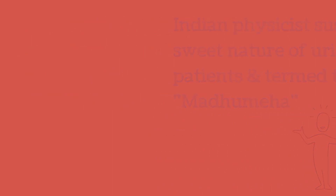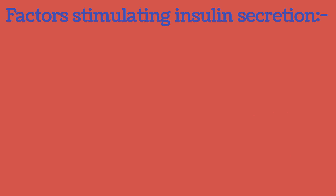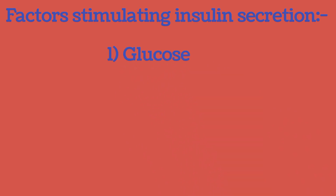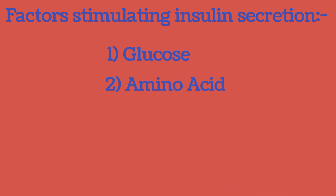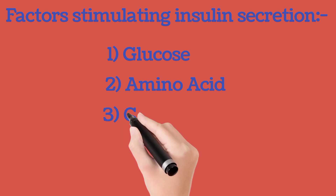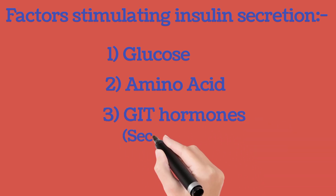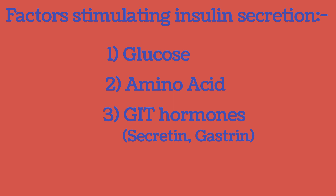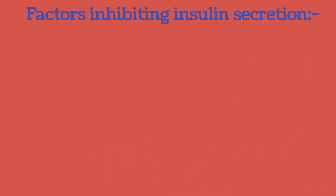Now, let's see some factors in stimulating insulin secretion. First is glucose, second is amino acid, third is GIT hormones like secretin and gastrin. Now, let's see factors inhibiting insulin secretion, i.e., epinephrine.